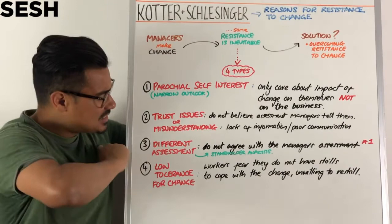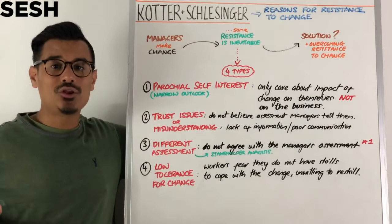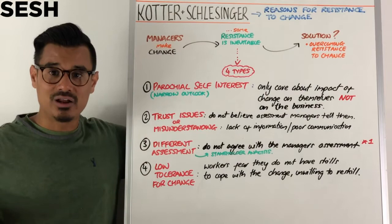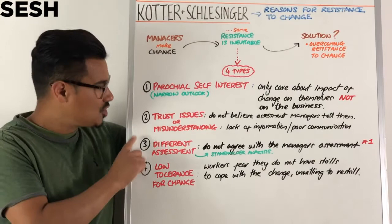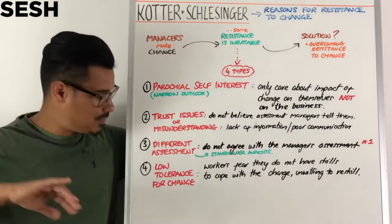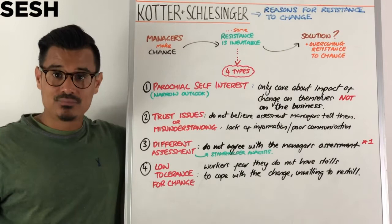The third is a different assessment — the fact that stakeholders do not necessarily agree with the manager's assessment of the situation or what they're recommending for change. You can definitely loop in stakeholder analysis here. Do not confuse this with type one — type one is about caring only about yourself and not the business, whereas type three is that you simply see the situation a different way based on the evidence.